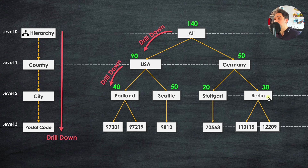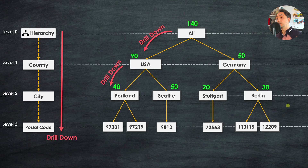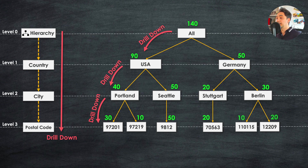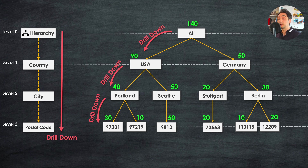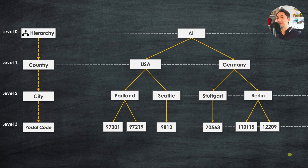At the city level, sales split between Portland and Seattle — 40 and 50 — and for Germany we have 24 for Stuttgart and 30 for Berlin, so we see more details about our sales. Drilling down further to the lowest level — the leaves — we go from city to postal code. Portland splits between two postal codes, Seattle stays the same with one child, Stuttgart stays at 20, and Berlin splits into two postal codes. Drill down navigates through the hierarchy from higher to lower levels of detail, like expanding a tree.